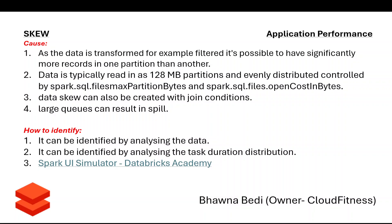If your machine does not have enough capacity, it can also cause spill — that's a second issue. The first issue is skewness: one task takes a lot of time because it has more data. Data skewness can happen at any time as data is transformed — not just because of partitioning, but even when you're filtering data or putting a join. When you're filtering data, it's possible to have significantly more records in one partition than another.